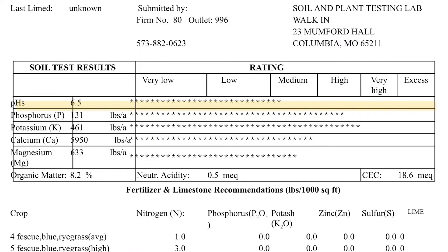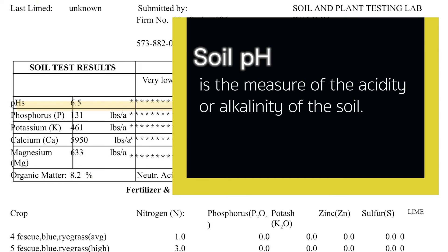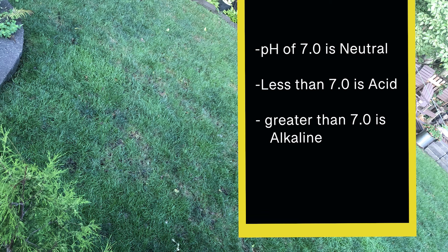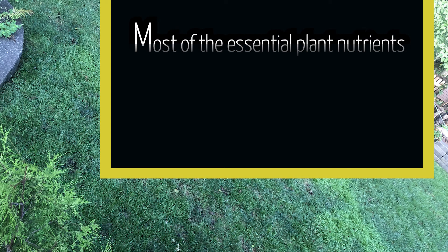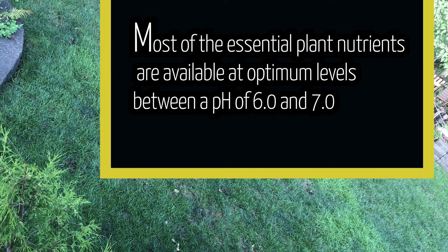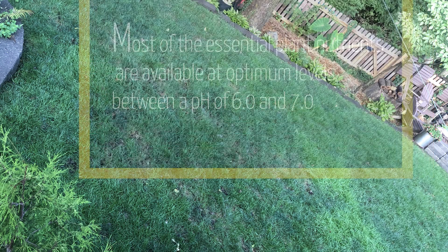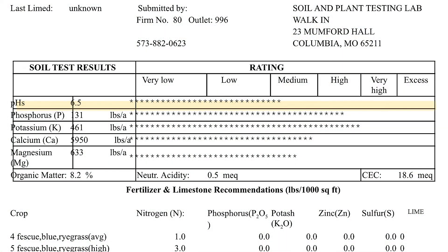First, let's look at the soil pH. Soil pH is a measure of the acidity or alkalinity of the soil. A pH of 7 is neutral, less than 7 is acid, and greater than 7 is alkaline. Most of the essential plant nutrients are available at optimum levels between a pH of 6 and 7. The soil pH at 6.5 on this test report is optimal, so we don't need to add any chemicals or amendments.